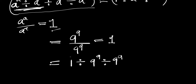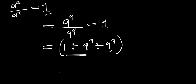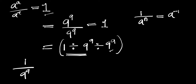Now let's work on this. If you have 1 divided by 9 to the power of 9, divided by 9 to the power of 9, you also concentrate on the first two terms. We are going to have it as 1 divided by 9 to the power of 9. Now let's consider this identity: if you have 1 divided by a to the power of n, this equals a to the power of negative n.